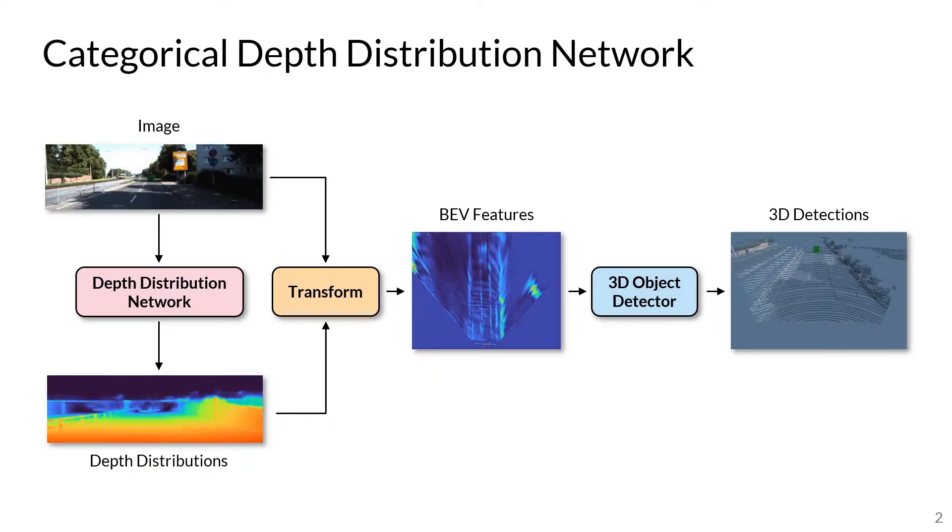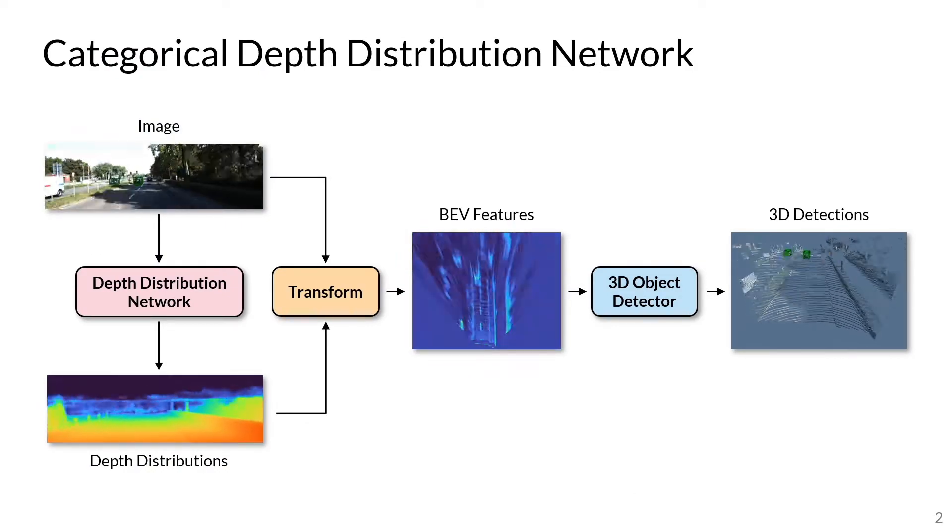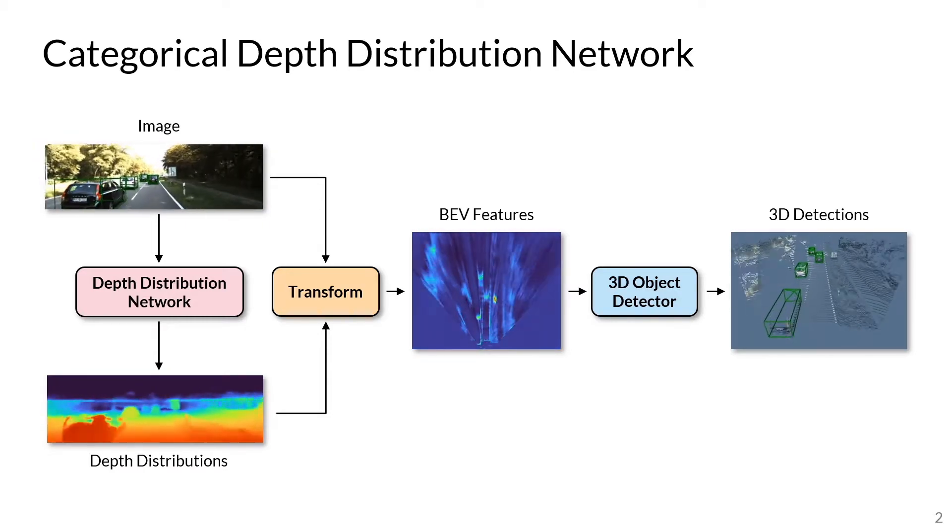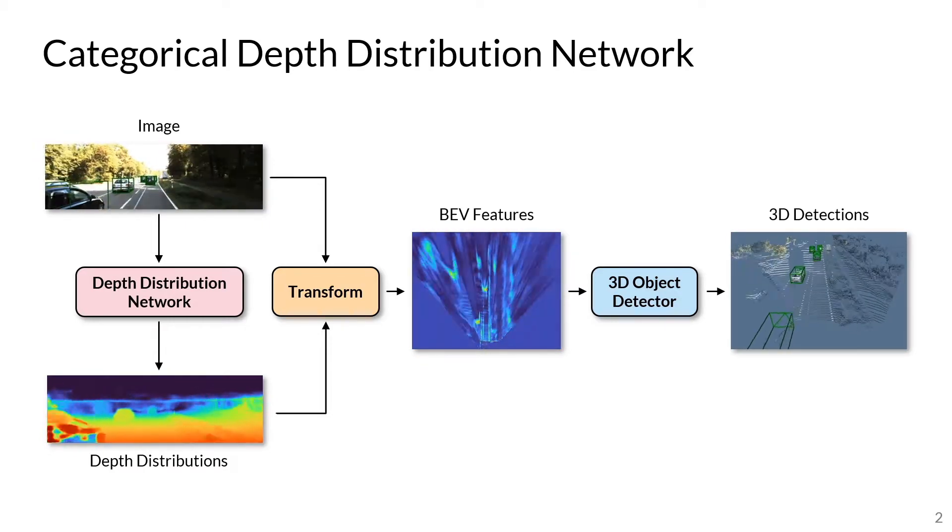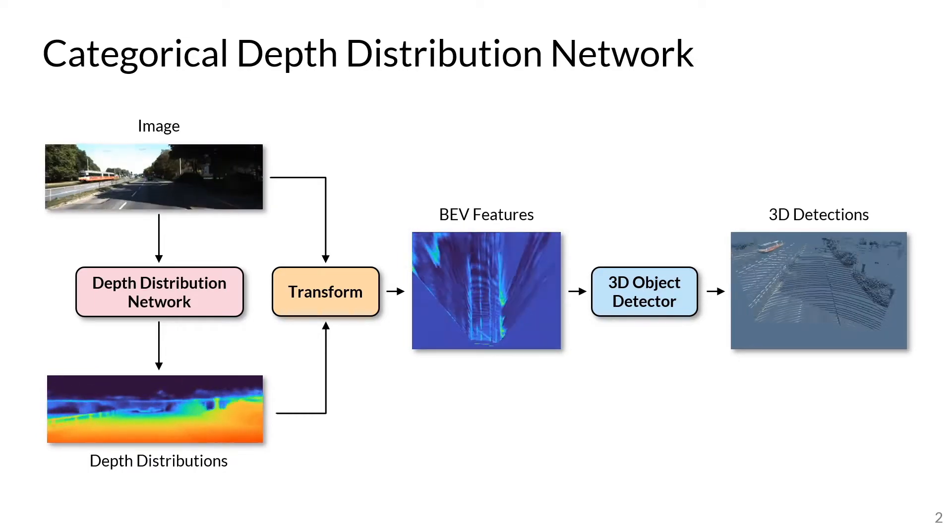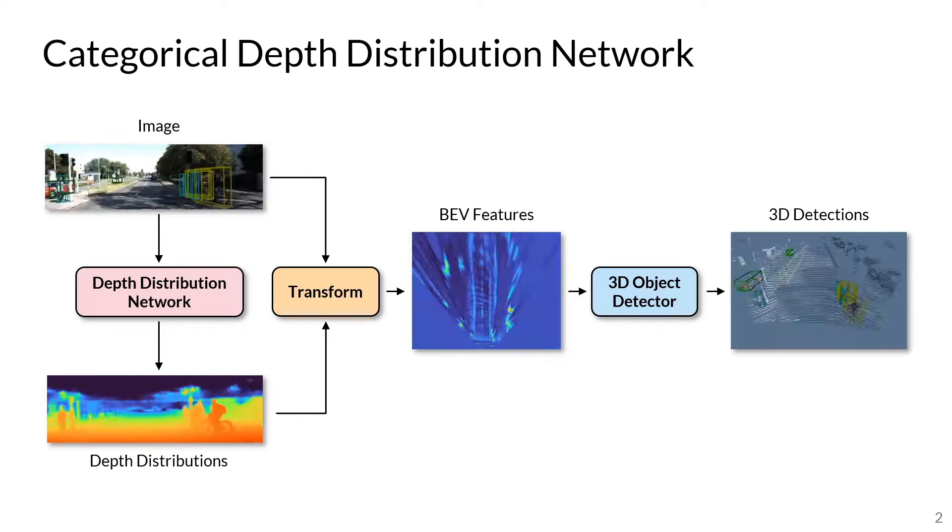CADIN is a deep neural network that performs monocular 3D object detection by estimating 3D bounding boxes of objects using only a single camera. The key feature of our method is the prediction of a categorical depth distribution for each image pixel, in order to accurately locate image information in 3D space.